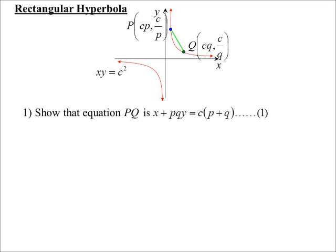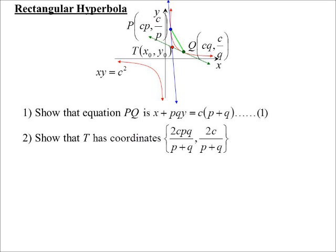We found the equation of the chord. So in this case, Cp, C on P is one point. Cq, C on Q is another point. We could show the equation of that chord as x plus PQy is equal to a constant times P plus Q. Then T is the point of intersection of the two tangents. So we could solve them simultaneously, and we would come up with this expression: 2cpq on P plus Q, 2c on P plus Q. So therefore, x0 is 2cpq on P plus Q. y0 is 2c on P plus Q. So what we basically want to do is substitute in and get rid of the PQ and the P plus Q from the equation of the chord and replace them with x0 and y0.